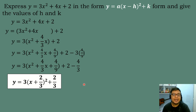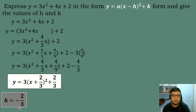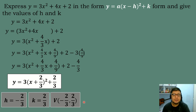Identify the values of h and k. Since 2/3 inside is positive, the value of h is negative 2/3. And the value of k is the same as that constant: k = 2/3. So the vertex of the quadratic equation is at (−2/3, 2/3).